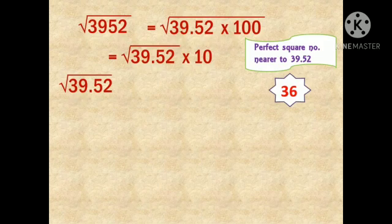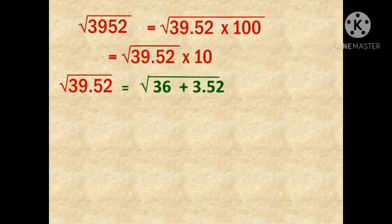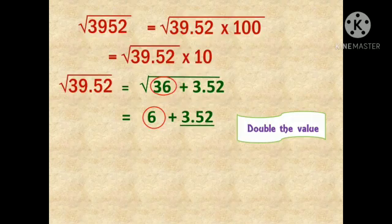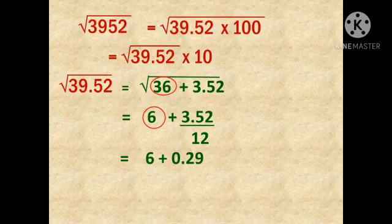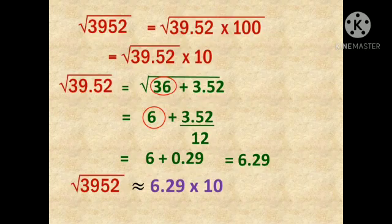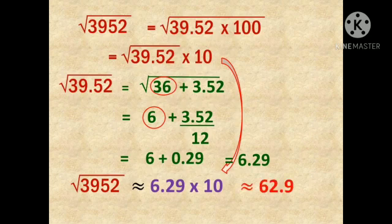We rewrite 39.52 as 36 plus 3.52. We find the square root of 36, which is 6, then write 6 plus 3.52 divided by double of 6, which is 12. The calculation: 6 plus 3.52/12 = 6 plus 0.29 = 6.29. So 6.29 is the square root of 39.52. But we want the square root of 3,952, so we multiply 6.29 by 10 to get 62.9. The approximate square root of 3,952 is 62.9. Whether it is a 4-digit or 5-digit number, we use the same method with a small modification.